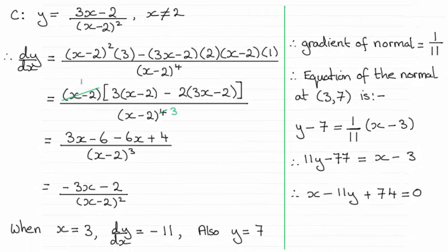Hi there. Now for this question, we had to find the equation of the normal to the curve C, given by this equation here, at the point where x equals 3, and give our answer in the form ax plus by plus c equals 0, where a, b and c are integers.